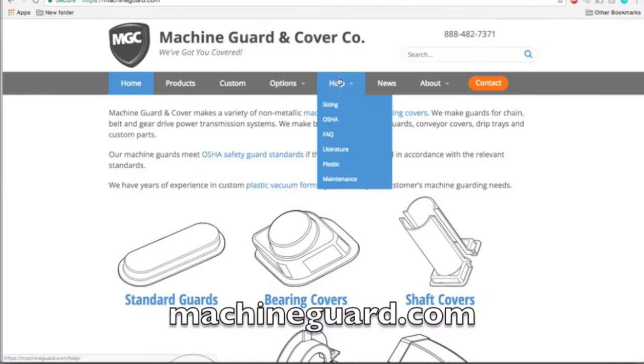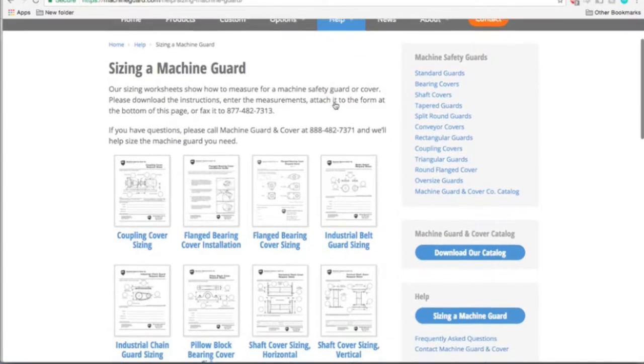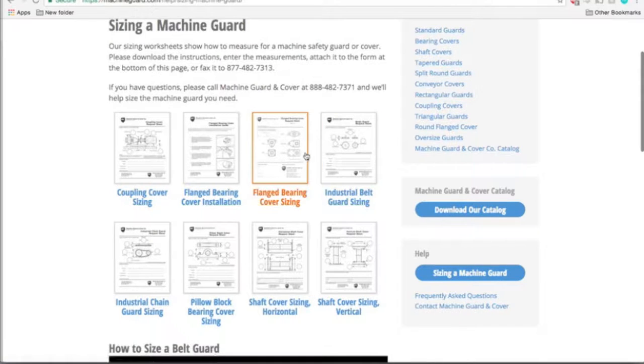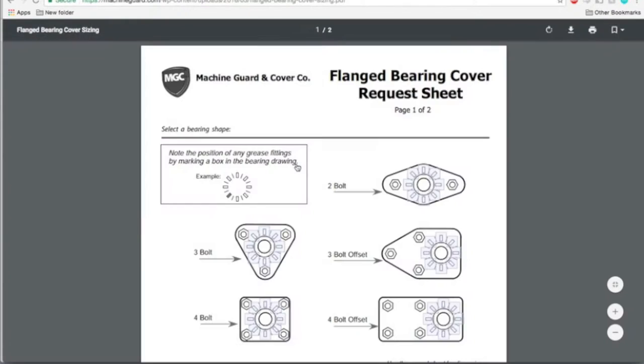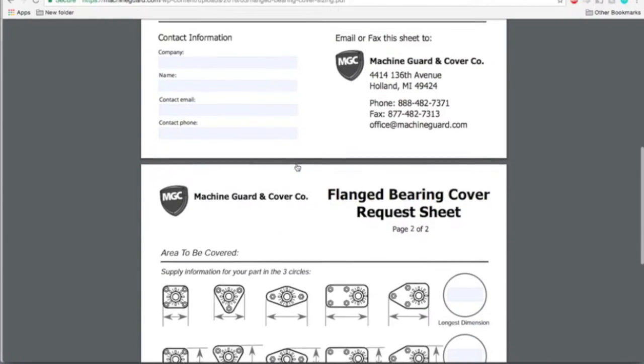First, visit MachineGuard.com and on the home page click on the help tab and select sizing from the drop-down menu. This will bring you to a page with links to different sizing worksheets. Select the link for flanged bearing cover sizing.